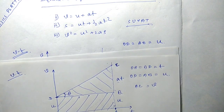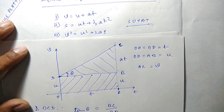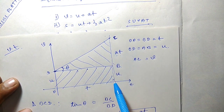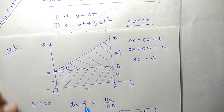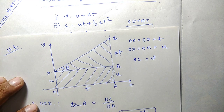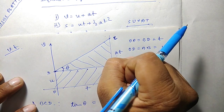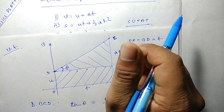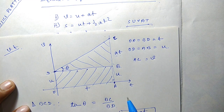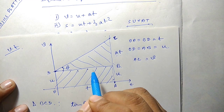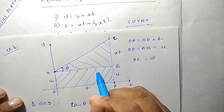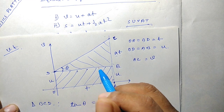For the graphical derivation, you simply draw the velocity-time graph, find the final velocity using the slope, and find the displacement as the area under the graph. I hope this video helped you. If you liked it, please give it a thumbs up and share it with your friends. Please subscribe to my channel, and if you have any questions or suggestions please write them in the comment section. Thank you for watching and take care, bye.